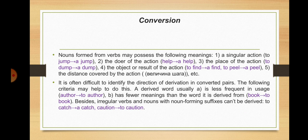Nouns formed from verbs may possess the following meanings: a singular action ('to jump' → 'a jump'), the doer of the action ('help' → 'a help'), the place of the action ('to dump' → 'a dump'), the object or result of the action ('to find' → 'a find', 'to peel' → 'a peel'), and the distance covered by the action. It is often difficult to identify the direction of derivation in converted pairs. A derived word usually is less frequent in usage and has fewer meanings than the word it is derived from. Besides, irregular verbs and nouns with noun-forming suffixes can't be derived: 'to catch' / 'a catch', 'caution' → 'to caution'.